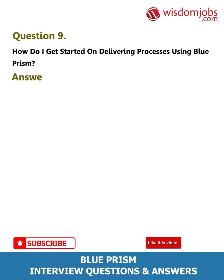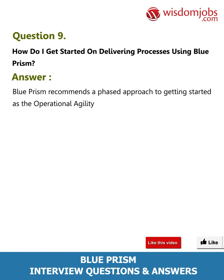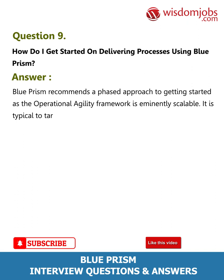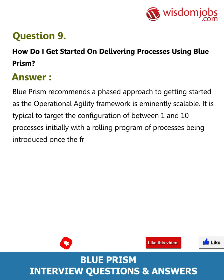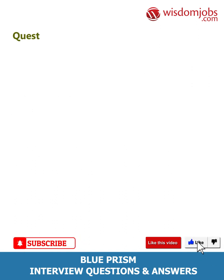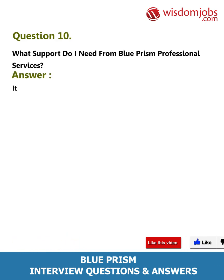Question 9: How do I get started on delivering processes using Blue Prism? Answer: Blue Prism recommends a phased approach to getting started. As the operational agility framework is eminently scalable, it is typical to target the configuration of between 1 and 10 processes initially, with a rolling program of processes being introduced once the framework is established.